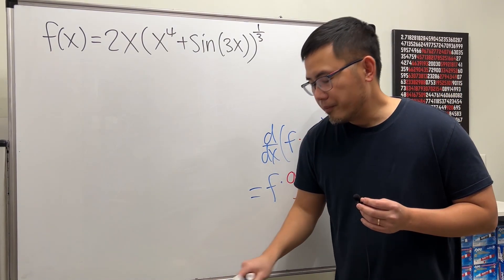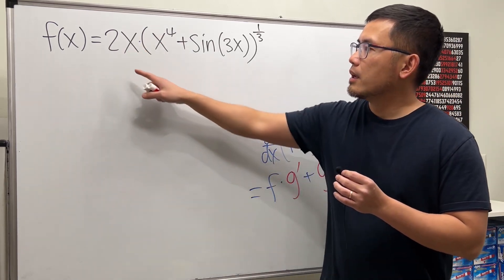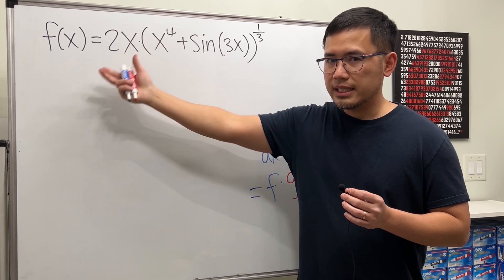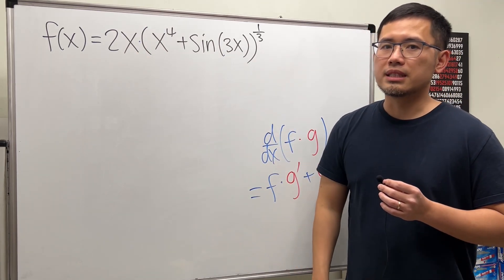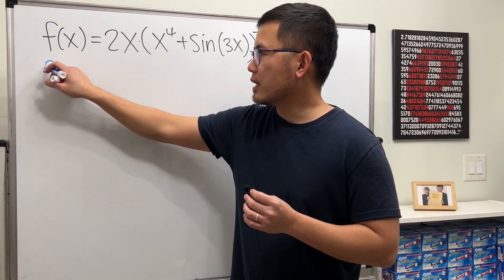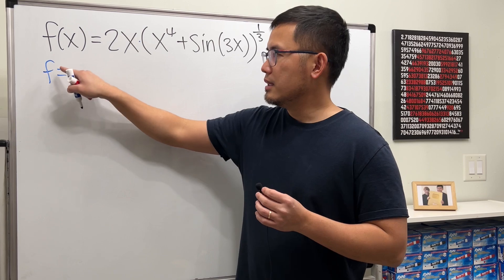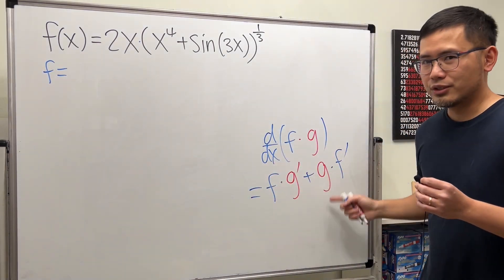And now, let me go through this with you. For this right here, I will break it down for you guys as follows. We have 2x, let's take that to be the first function, and then this right here, let's take that to be the second function. It will be easier if I break this down. I will put down this as little f. This f and that f are different. It's just a notation issue, right?